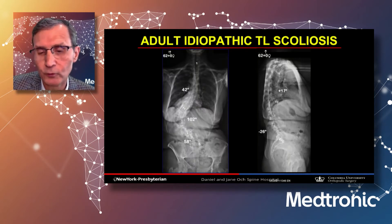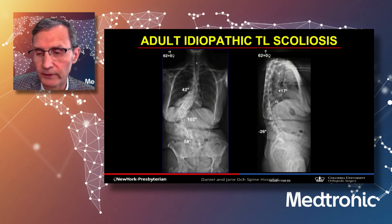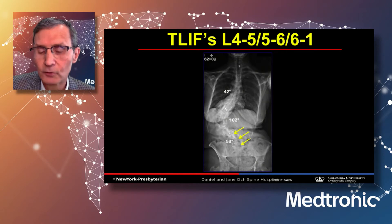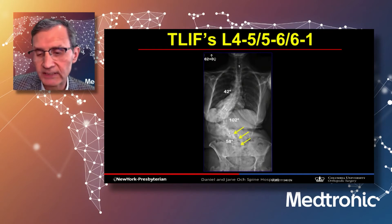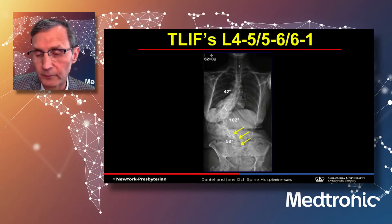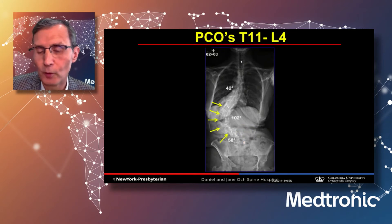This 62-year-old female presented with a 42-degree thoracic, 102-degree major thoracolumbar curve, and 58-degree structural lumbar curve. Sagittal plane alignment is reasonable regionally and globally. She actually has six lumbar vertebrae, so I'm doing TLIFs at L4-5, L5-6, and L6-S1 — not only for fusion but for correction — pushing the cages into the concavity to horizontalize toward the sacrum. I'll also do posterior column osteotomies to release the main thoracolumbar curve, which is quite stiff and large in magnitude.